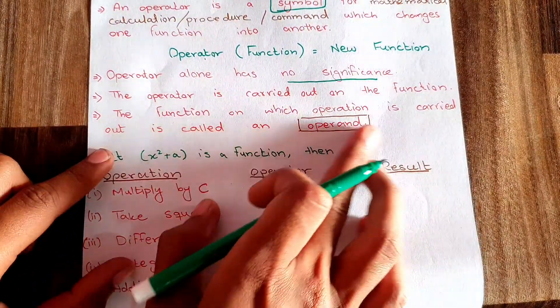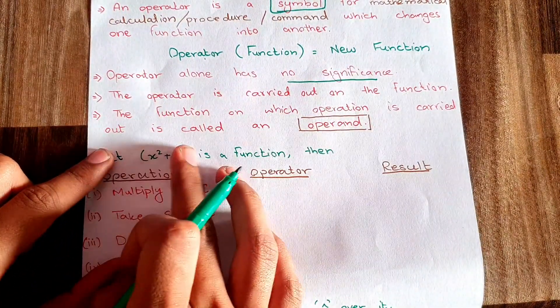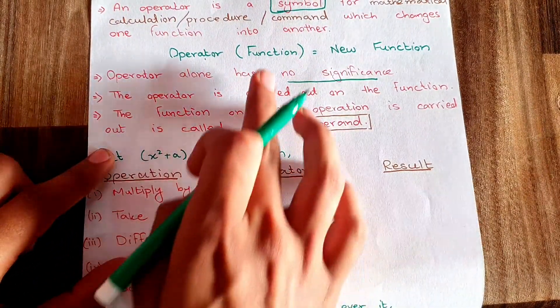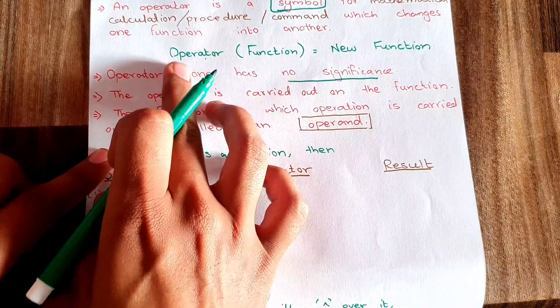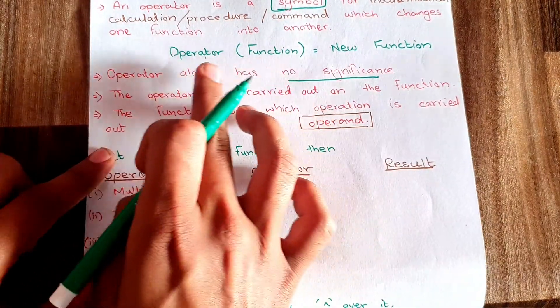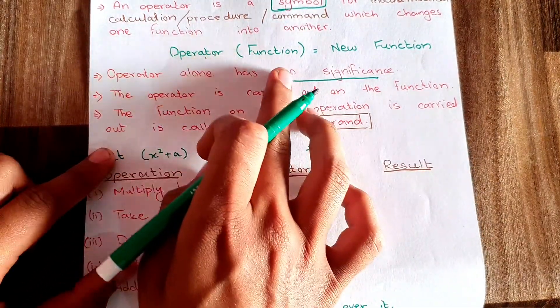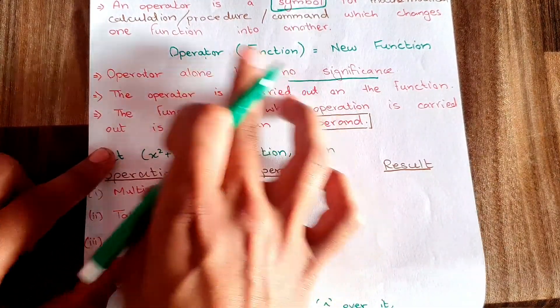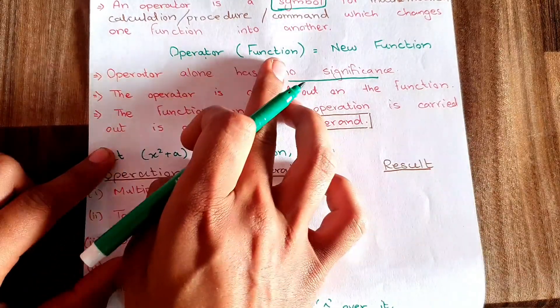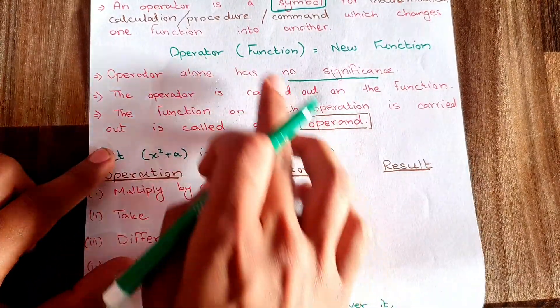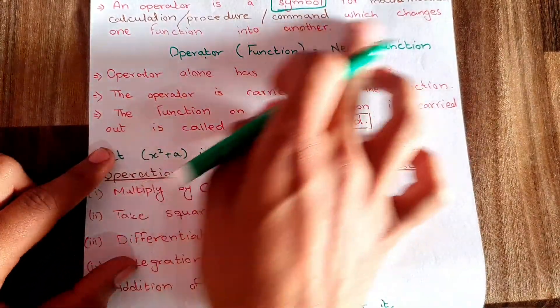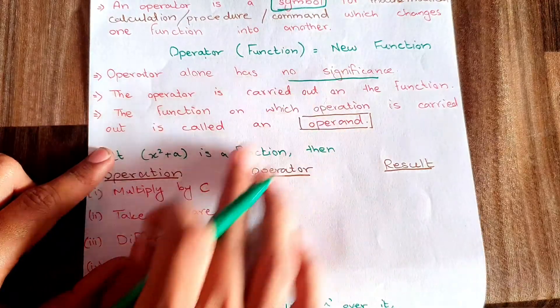The function on which the operation is carried out is called the operand. The function on which the operator works is called the operand. So here, this is the operand and this is my new function.